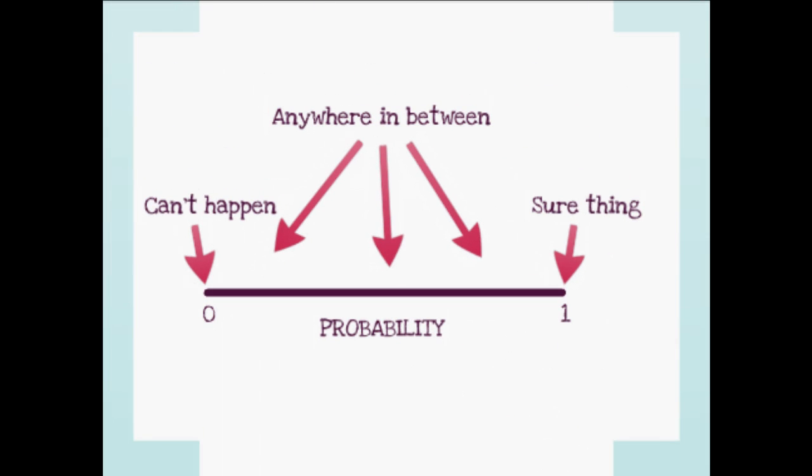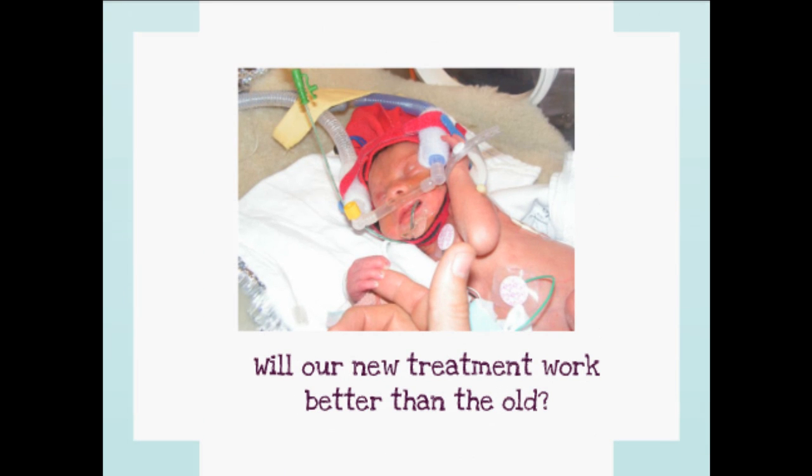P refers to probability, so the p-value is a probability between 0 and 1. P-values come from testing theories using sample data. A common example is a comparison between a standard treatment and a new treatment using a randomised control trial.